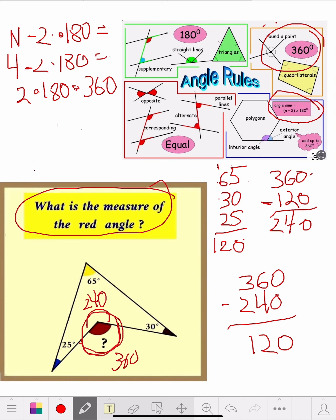We got 360 minus 240 equals 120. That's it. So the missing red angle is 120. Let's square that off so the teacher knows, my answer is 120. But you see how you figured that out.